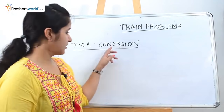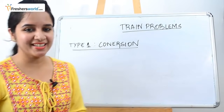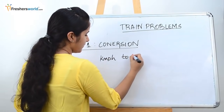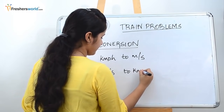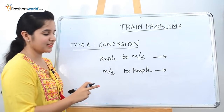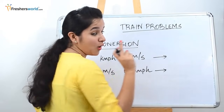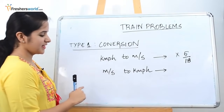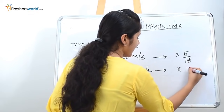Type 1 is conversion — a very simple problem that you may face in any exam. The conversion types are kilometers per hour to meters per second, or meters per second to kilometers per hour. When the question asks you to convert from kilometers per hour to meters per second, always multiply by 5/18. When the question says convert from meters per second to kilometers per hour, multiply by 18/5.